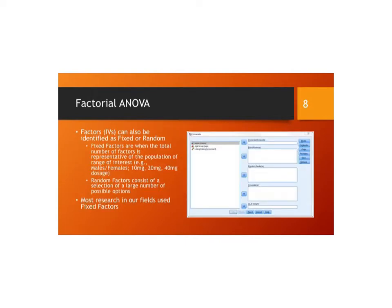Factors or independent variables can be identified as fixed or random. Fixed factors are when the total number of factors is representative of the population of interest. For example, males, females, 10 milligrams, 20 milligrams, 50 milligrams. This is what we use in applied sciences in our fields in HPER.